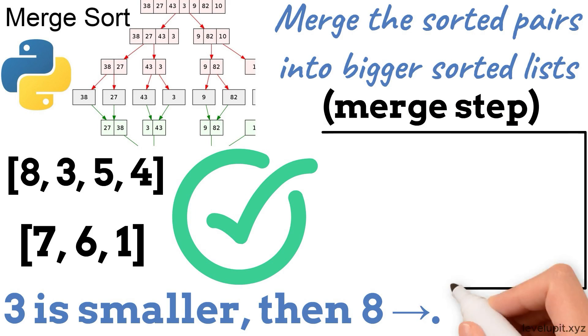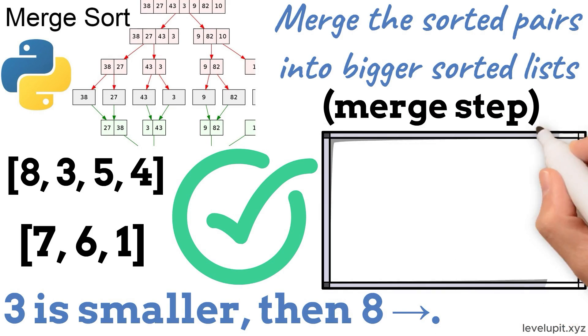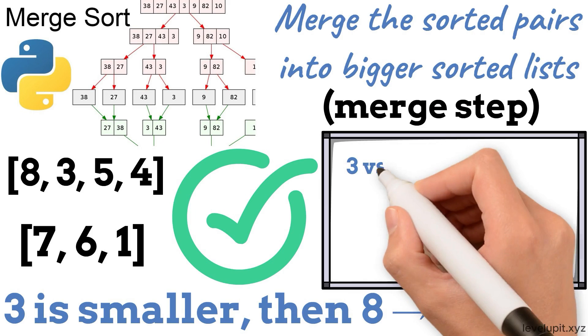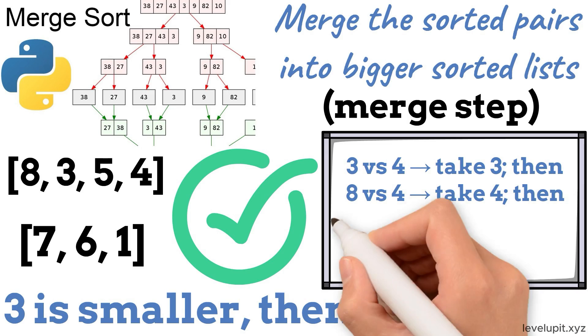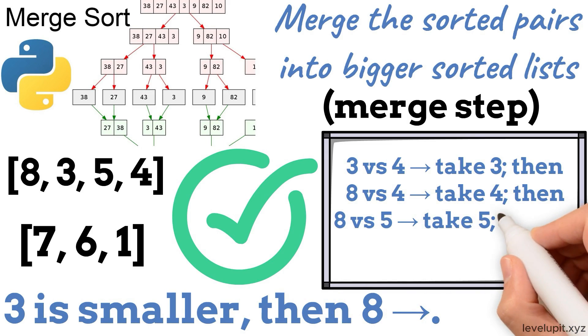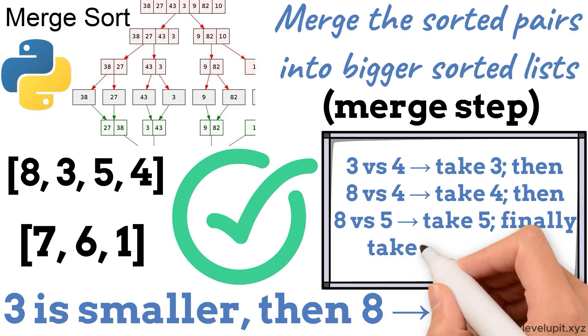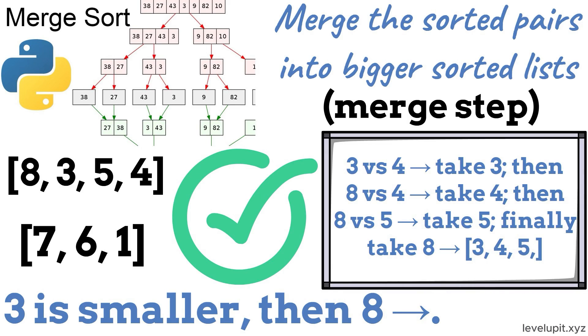The magic is the merge step. If we have 3, 8 and 4, 5, we compare 3 versus 4, take 3, then 8 versus 4, take 4, then 8 versus 5, take 5. Finally take 8 to get 3, 4, 5, 8.